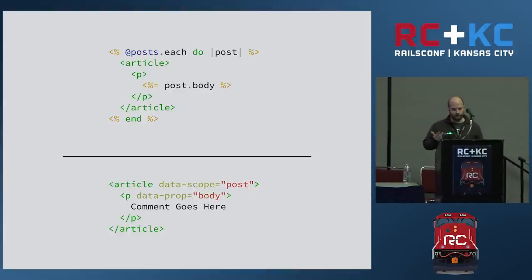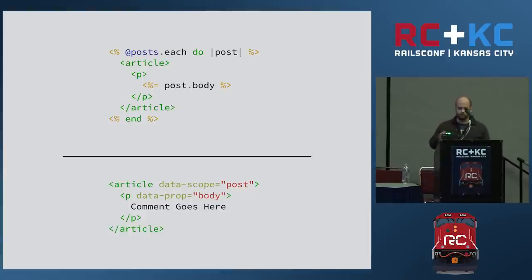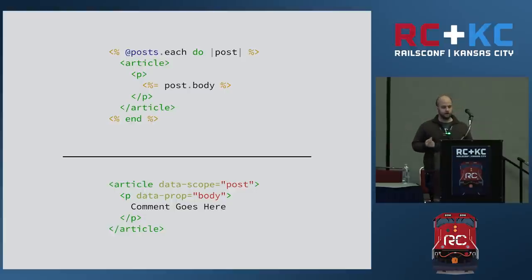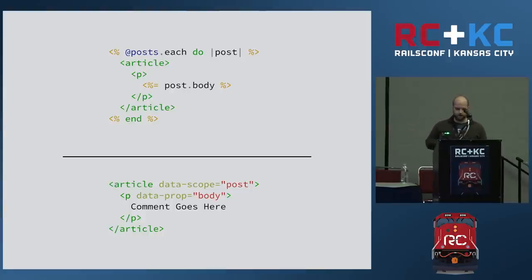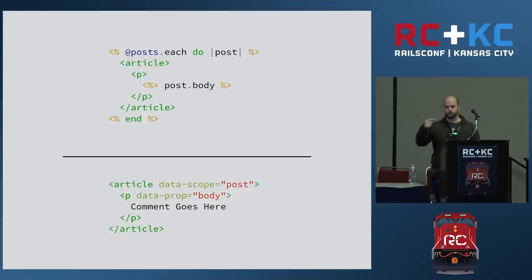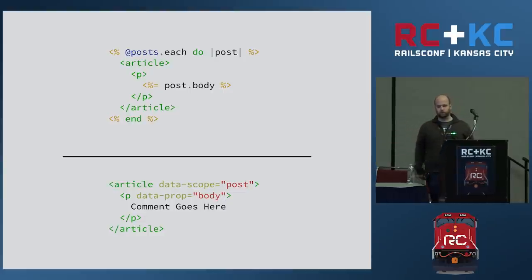What you see at the bottom is a Pacquiao view — the same exact thing as the top. You'll notice there's no Ruby code, but there are two attributes: data scope and data prop. In Pacquiao terminology, a data scope represents a data type. So here we're saying that this article represents a post in our system. And the paragraph tag nested within the post represents an attribute of it — the body of its parent scope or post.